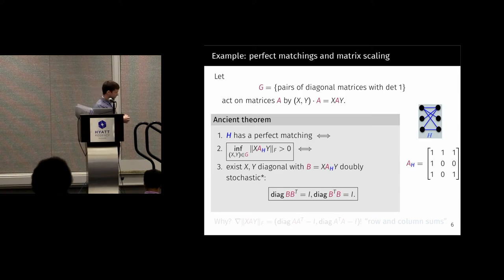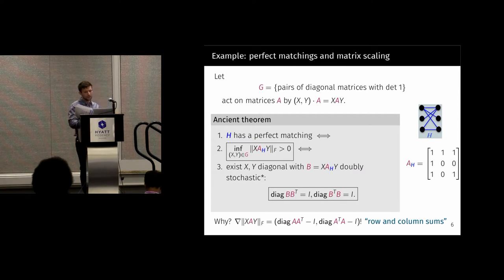This is equivalent with the existence of X and Y diagonal, such that the scaled matrix B is doubly stochastic. But here we have this weird version of doubly stochastic, which is probably not what you're used to. What the version I've written there actually says is that the L2 norms of the columns and rows are all one. But these problems are completely equivalent. This is the version that generalizes better for us. And this 1, 2, 3 here is going to generalize nicely to the non-commutative setting.